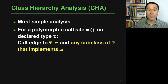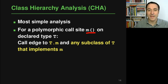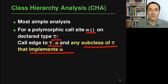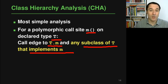Let's start with the most simple of these algorithms: the class hierarchy analysis algorithm. What it does can be summarized briefly — it looks at all polymorphic call sites where some method m is called, checks the statically declared type t of the base object of this call, and then for every subclass of type t that implements method m, it adds an edge to t.m. Essentially, it considers all possible subtypes the base object may have and all methods that may be called because the object may be an instance of one of these subtypes.